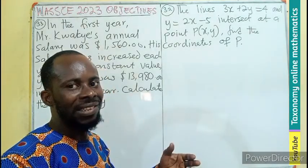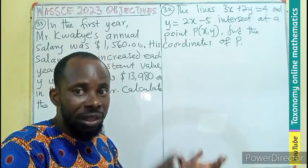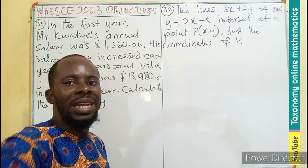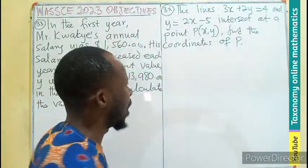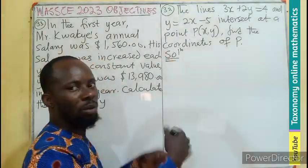their solution becomes the intersection of the two points. Because if they are intercepted, it's like a graphical method of solving a simultaneous equation. So their point of intersection becomes the solution of the two equations.